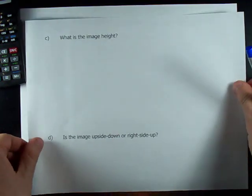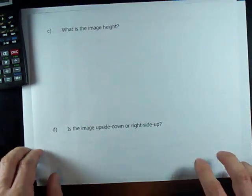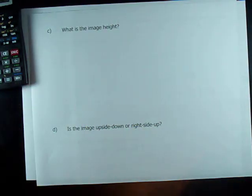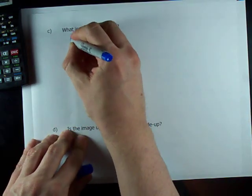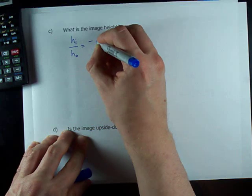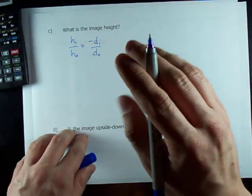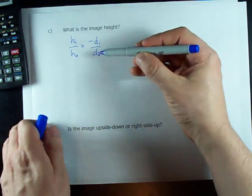A little follow-up here. I also want to know the image height. Now, I only have one equation that has image height in it, and that's h_i over h_o equals negative d_i over d_o. Luckily for me, I have d_o.